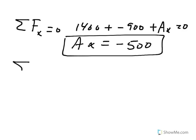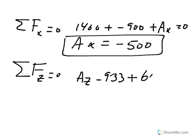And then finally, the last equation is sum of the forces in Z equals 0. So we have AZ, BZ, and the force, the 600, right? So AZ plus BZ, remember BZ is 933. And the 600 is going in the positive direction. Therefore, A sub Z is about 333 newtons.